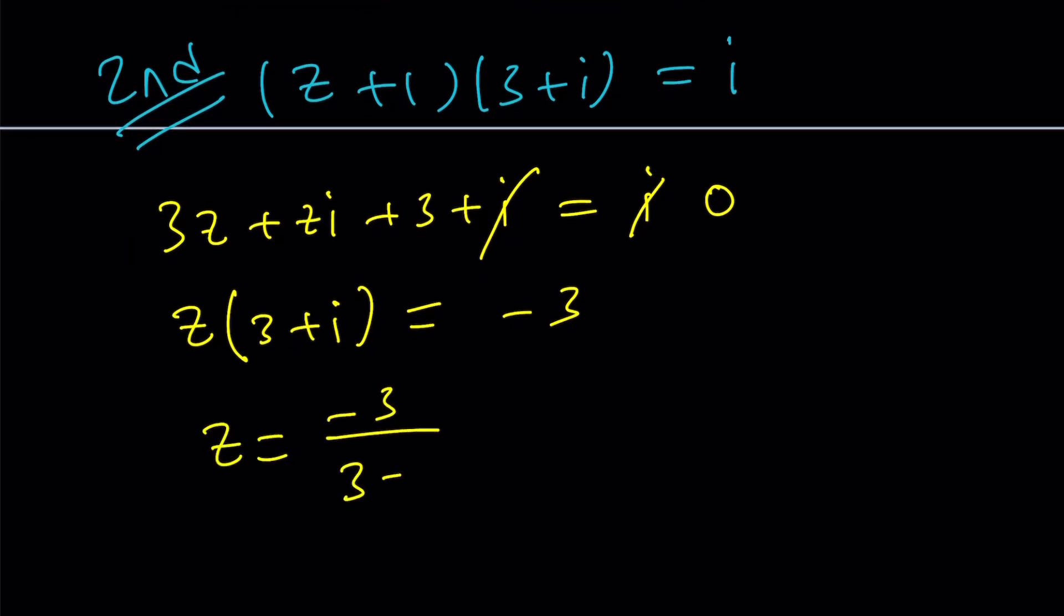Great. Let's go ahead and divide both sides by 3 plus I. And then remember the trick for division? You must get rid of the I at the bottom. In other words, we must multiply by the conjugate. But not just multiply, of course, the top and the bottom. We're going to multiply by 3 minus I.